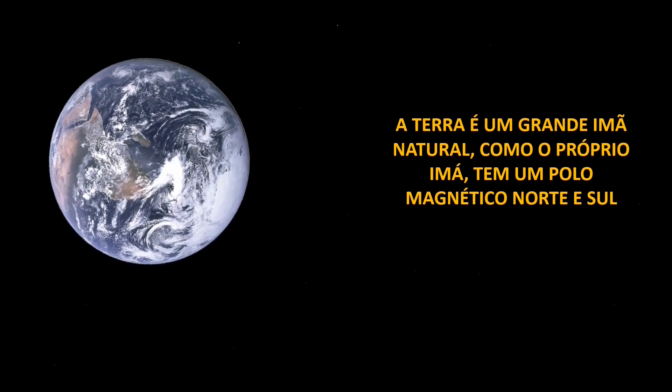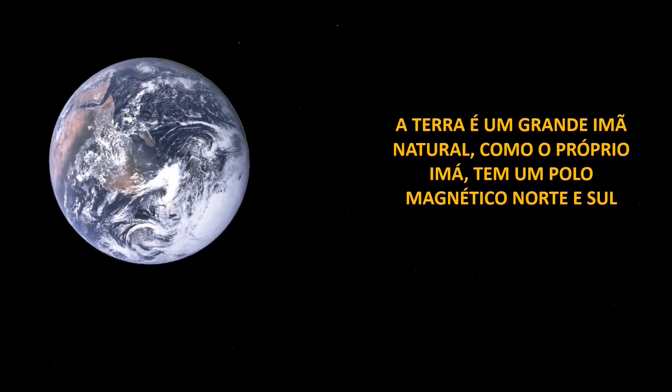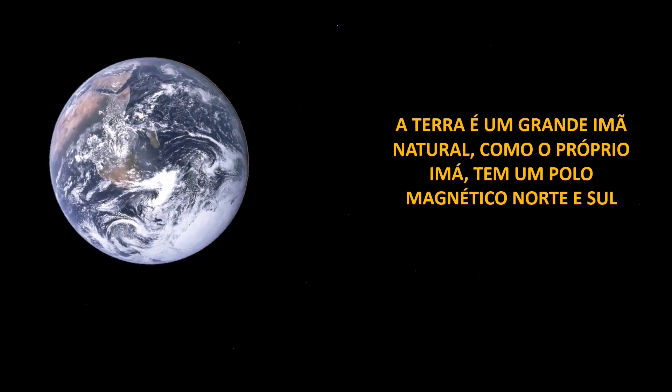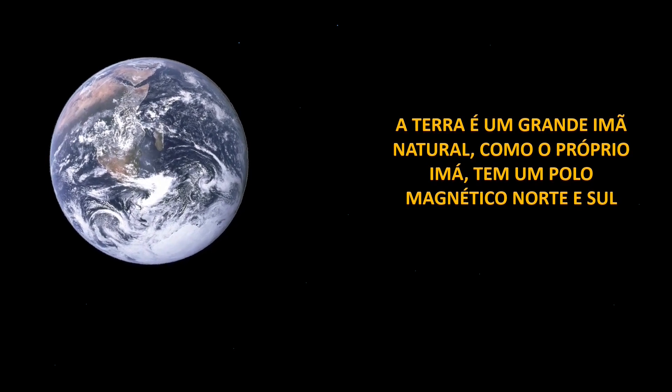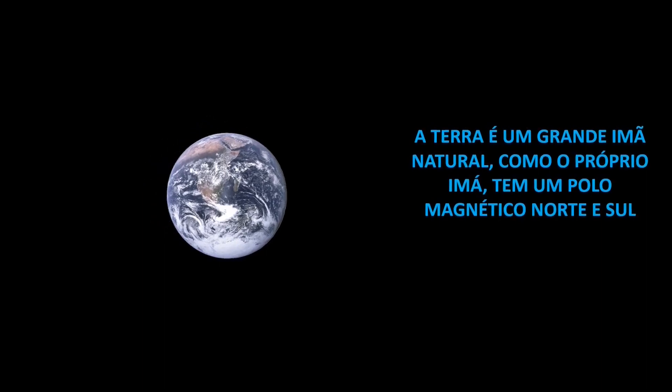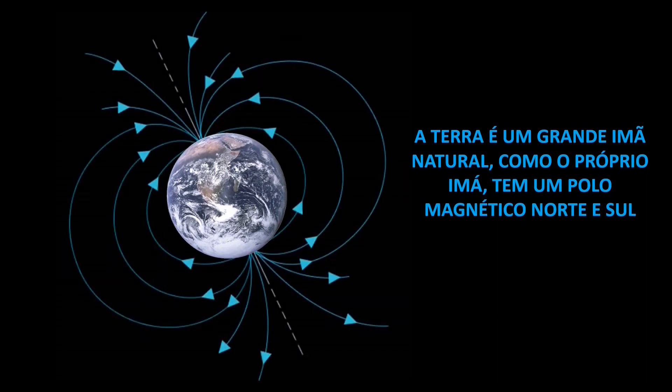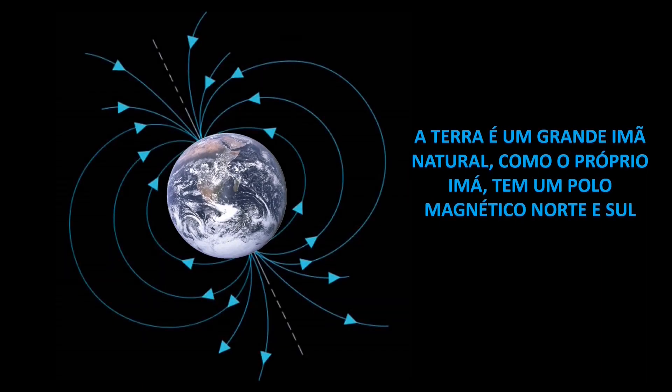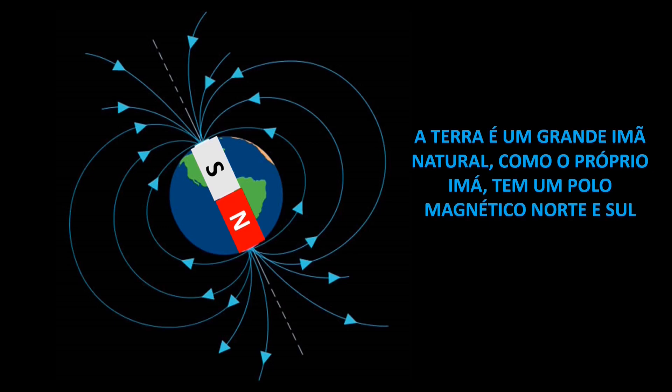Podemos dizer que nosso planeta é um gigantesco imã, pois como um imã, possui também um campo magnético com polos norte e sul. E graças a esse campo magnético, o homem passou a se orientar, mesmo diante do clima totalmente hostil, por um objeto criado há séculos atrás, a bússola. Muitos animais também têm a capacidade de se orientarem pelo campo magnético gerado pela Terra, também chamado de magnetosfera.